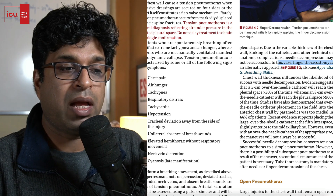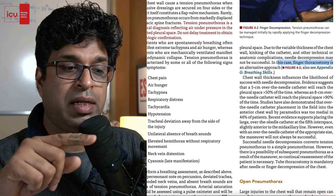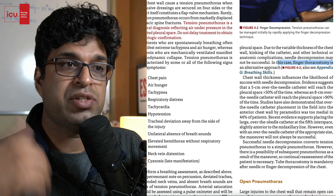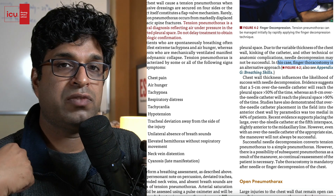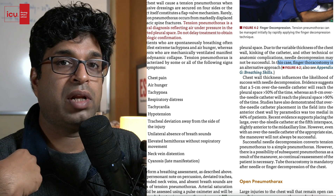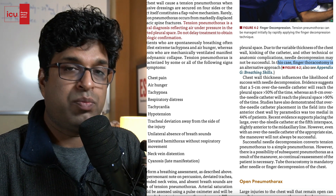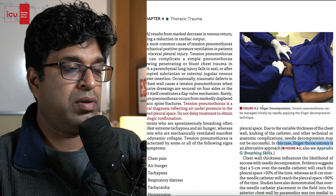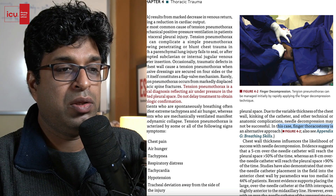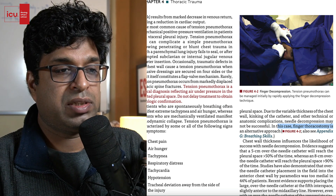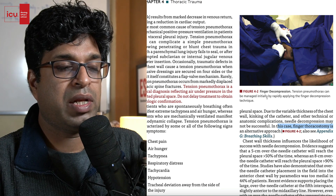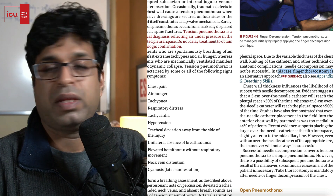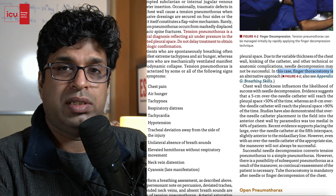Recent evidence supports placing the large over-the-needle catheter at the fifth interspace slightly anterior to the mid-axillary line. So it is now recommended by ATLS 2018 edition that for tension pneumothorax in adults, the site is changed from the mid-clavicular line to slightly anterior to the mid-axillary line in the fourth or fifth intercostal space. Also, if needles are not available, you can do finger decompression — tension pneumothorax can be managed initially by rapidly applying the finger decompression technique.